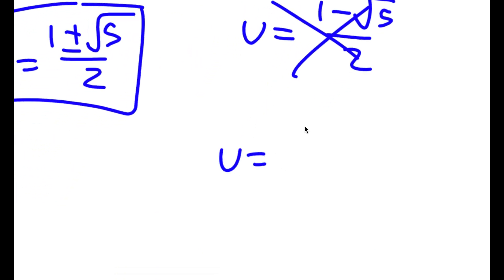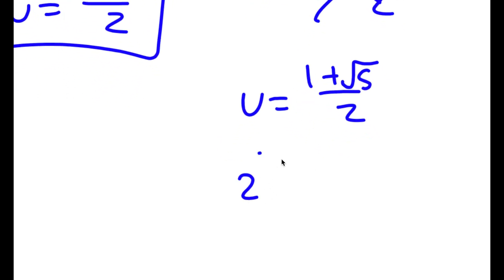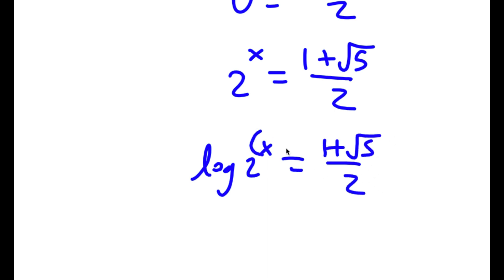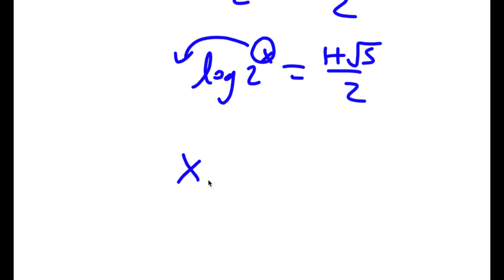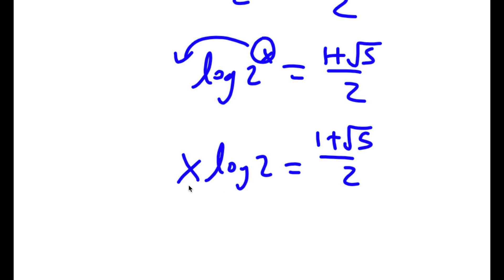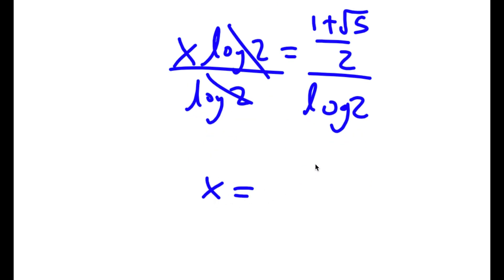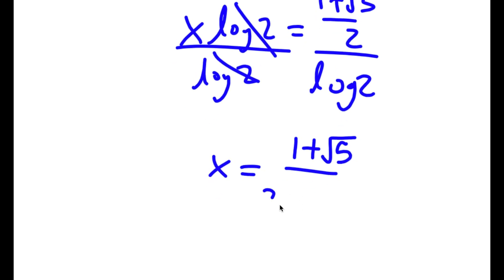Finally, I have u is equal to 1 plus the square root of 5 over 2. For this, 2 to the power of x is equal to 1 plus the square root of 5 over 2. I can take the log on both sides. So I get log of 2 to the power of x equals log of 1 plus the square root of 5 over 2. I can move the exponent to the front: x times log 2 equals log of 1 plus the square root of 5 over 2. Dividing both sides by log 2, I get x is equal to log of 1 plus the square root of 5 over 2, divided by log 2.